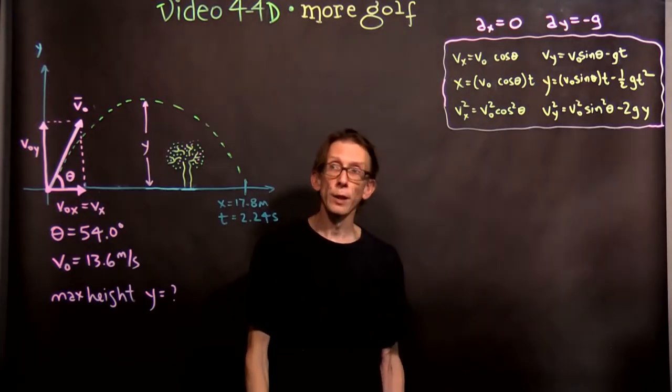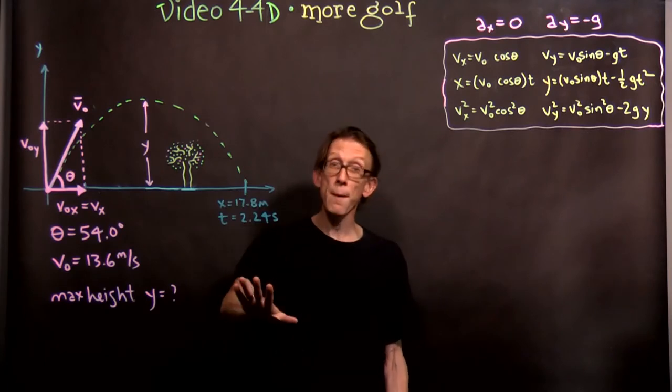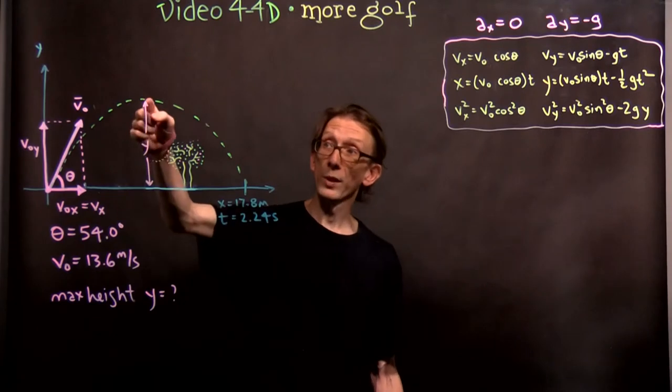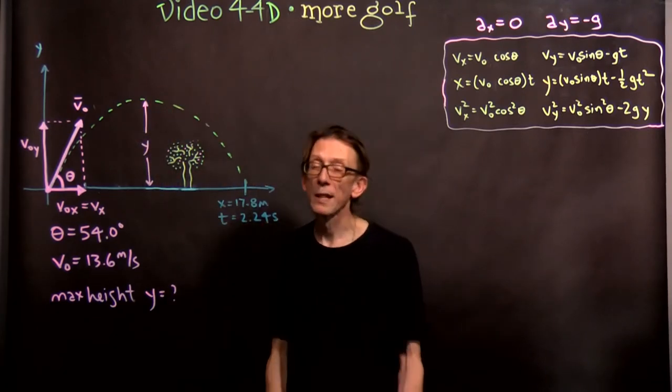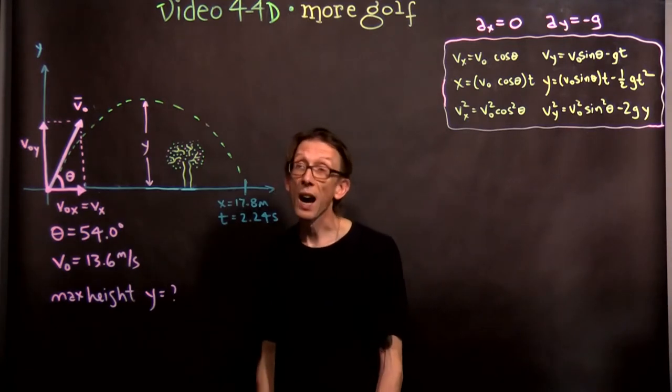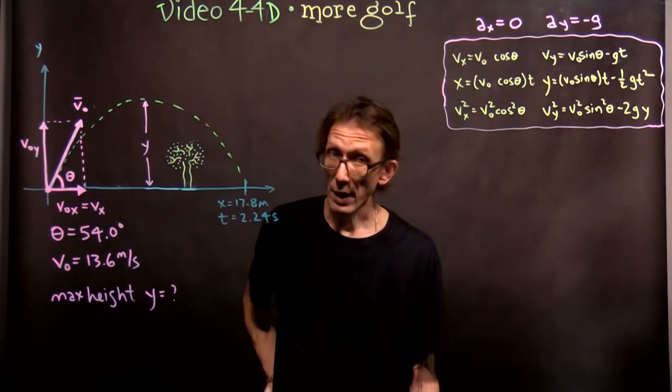I'm going to do it slightly differently. I'm going to make a different point. You could do it that way by finding the time first, using the time of 1.12 seconds at the top of the motion where it's at its maximum height. But I'm going to use a different condition. Instead of imposing a time, I'm going to impose a velocity.